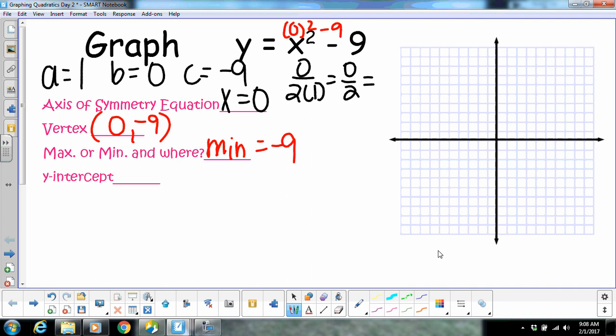Alright, and then the last thing we need to know is our Y intercept is negative 9. Okay, so now you have everything you need. You have everything you need in order to graph. Everybody with me?